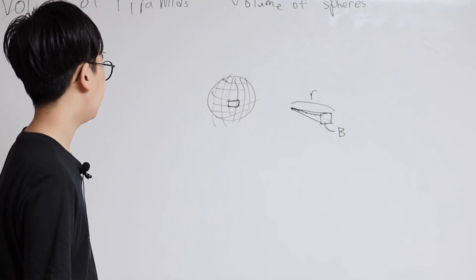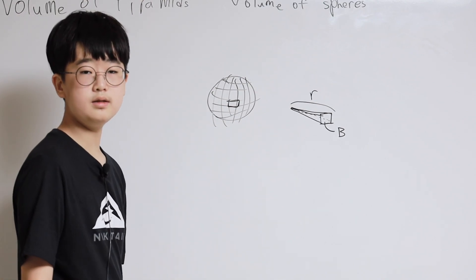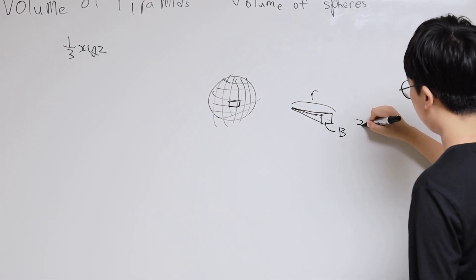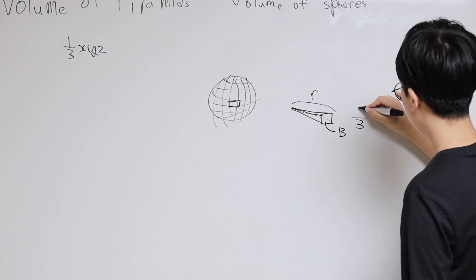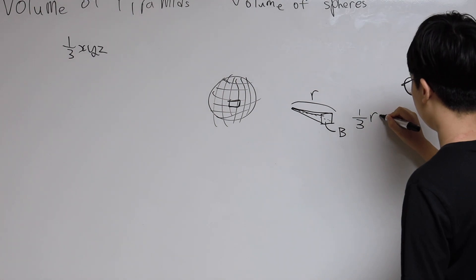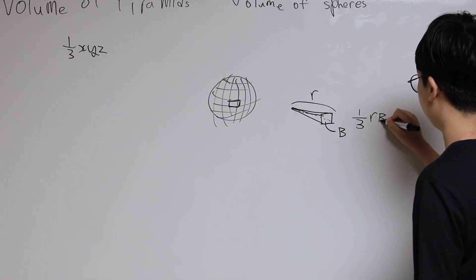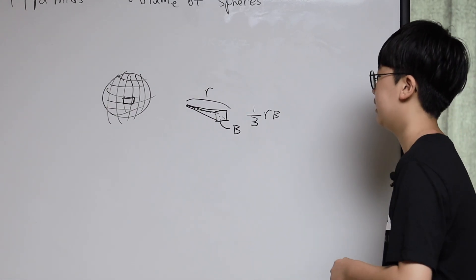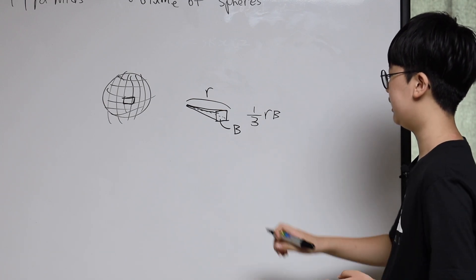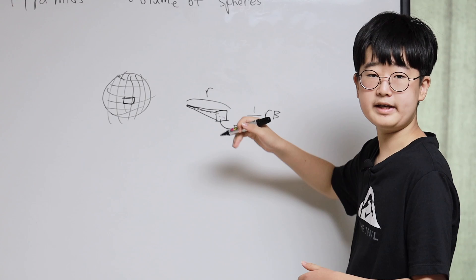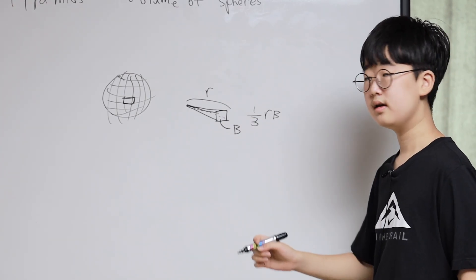Now, one pyramid would be a third of R multiplied by B. B is not a line, it's an area, so this works like that.